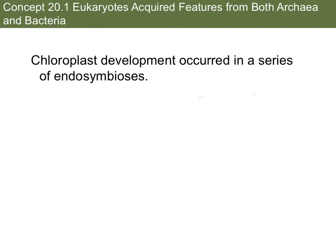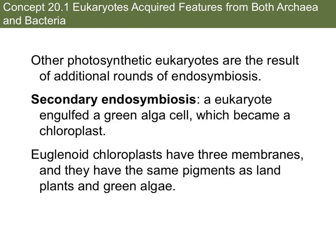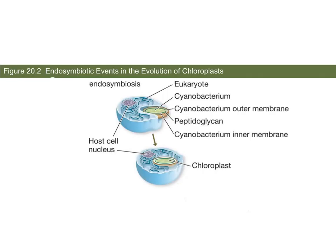The chloroplast is also believed to have developed through a series of processes. Here is a diagram depicting the process of endosymbiosis that led to the formation of the chloroplast. So here you have the primitive eukaryotic cell, and this primitive eukaryotic cell has its own membrane surrounding it. Here is the cyanobacterium, which also has its own membrane and a cell wall made of peptidoglycan. The engulfing process or phagocytosis of the cyanobacterium eventually led to the formation of a chloroplast.